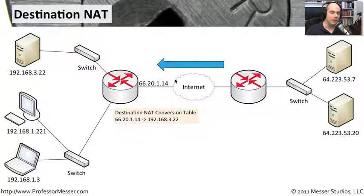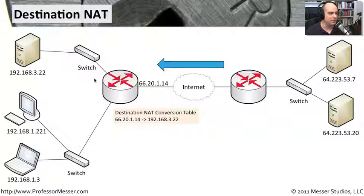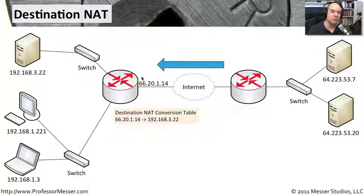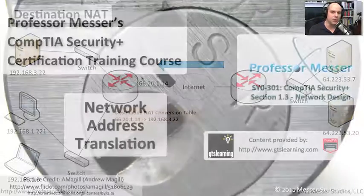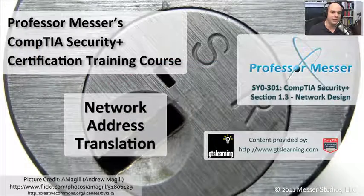So you could set up many different IP addresses that go to many different devices. You can set up one IP address and simply decide what port numbers are transmitted to what devices on the network. That's more of a PAT — a port address translation. There's a lot of flexibility that you get with this, and it does provide you with a significant security advantage, because we can now decide who gets to talk into our network, how they get to talk into our network, and what specific devices they can talk to.